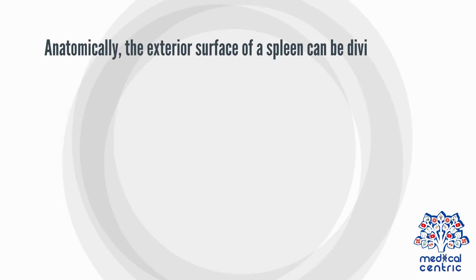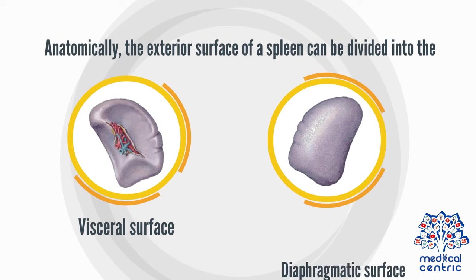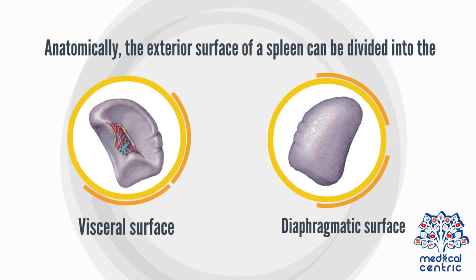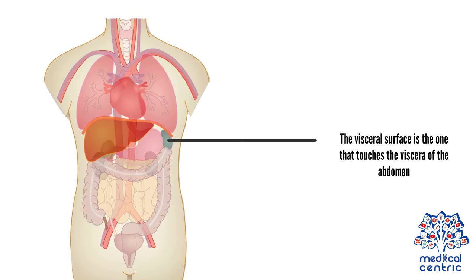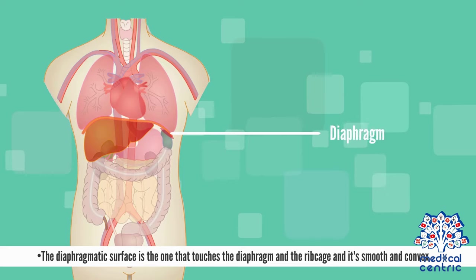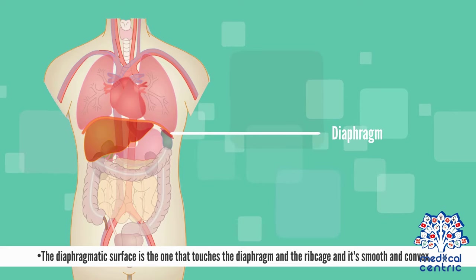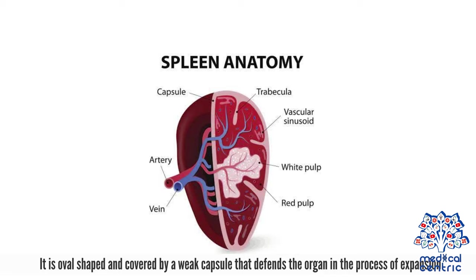Anatomically, the exterior surface of a spleen can be divided into the visceral surface and the diaphragmatic surface. The visceral surface is the one that touches the viscera of the abdomen — it is irregular and concave. The diaphragmatic surface is the one that touches the diaphragm and the ribcage, and it is smooth and convex.